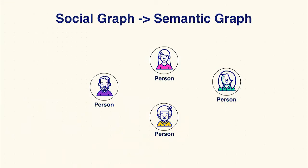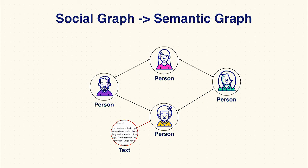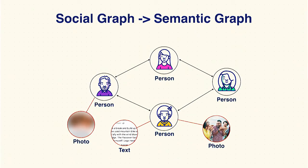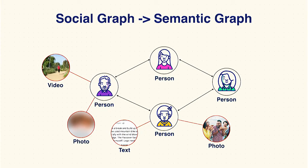If you think about how Facebook started, it was people coming together, connecting with friends and with people around you. And slowly, through these connections, using the Facebook platform to talk about things that they cared about, to upload their moments — whether it's photos or video. The goal for Applied Machine Learning, the group that I'm in, is to take the social graph and make it semantic.